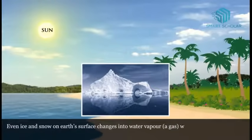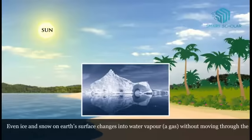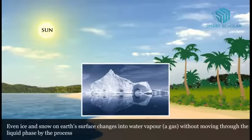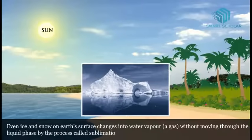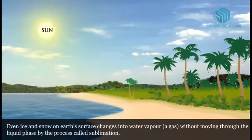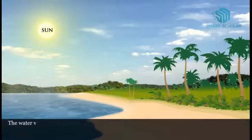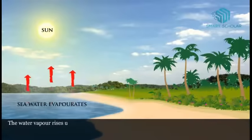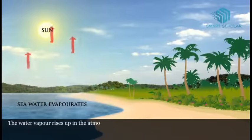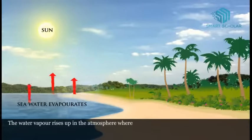Even ice and snow on earth's surface changes into water vapor without moving through the liquid phase, by the process called sublimation.